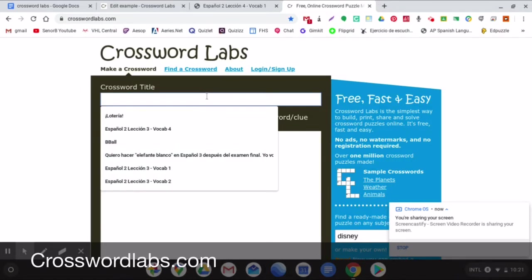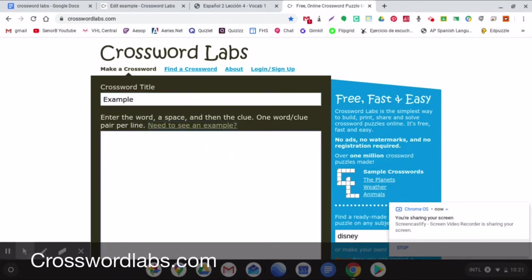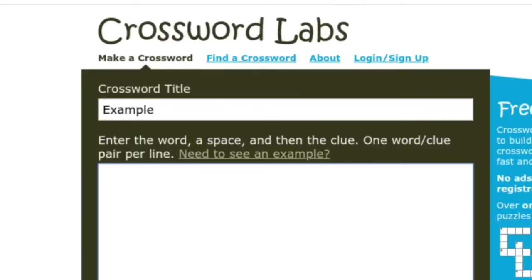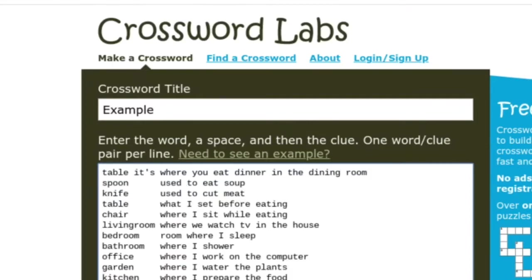Obviously, you can give your crossword a title, and then all you have to do is put the word down first that you want them to know. So let's say, for example, the word is table, and then you put a space after it, and then you give your clue. So maybe it's where you eat dinner in the dining room or something like that, and then you go through it and you put all your clues. So you put the word and then space and then the clue.